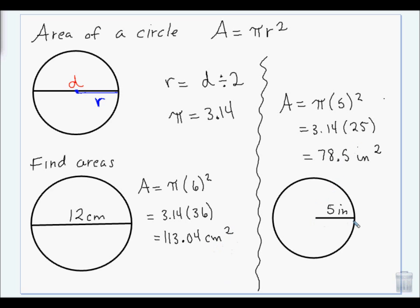Here we've already been given the radius, so it's pi times 5 squared, so it's 3.14 times 25, so that's 78.5, and it's inches squared.